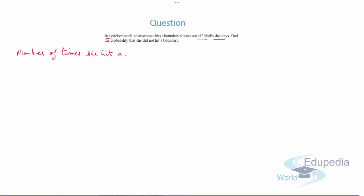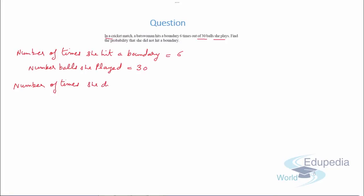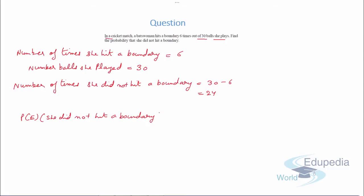To solve this, we write: number of times she hit a boundary is 6. Number of balls she played is 30. Number of times she did not hit a boundary equals 30 minus 6, which equals 24. Now we need to find the probability that she did not hit a boundary.